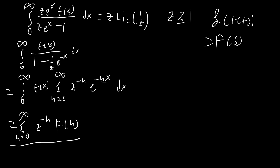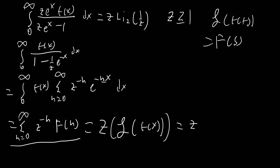Some of you who have watched my previous videos may know that this is actually what's called the z-transform. So now we're introducing another transform — it's a discrete transform and it's also one-to-one. So we can write this as the z-transform of the Laplace transform of f of x, and we know that this is equal to z·Li₂(1/z).